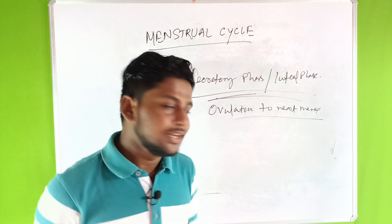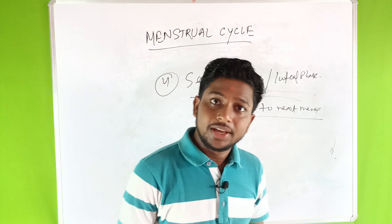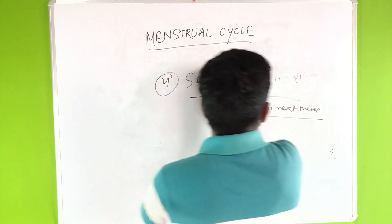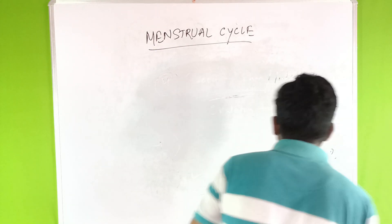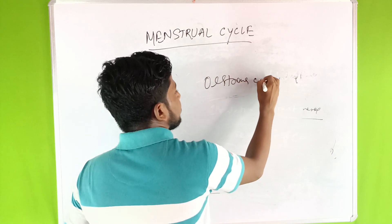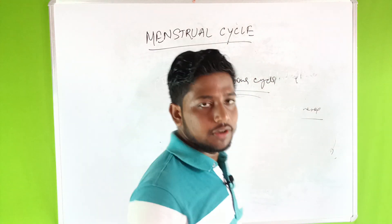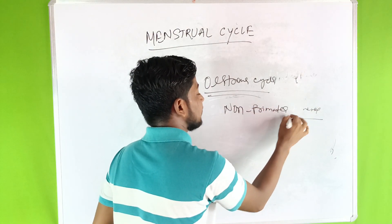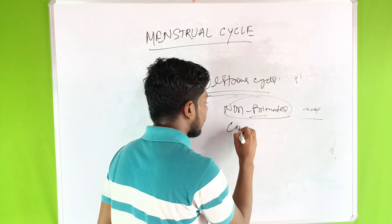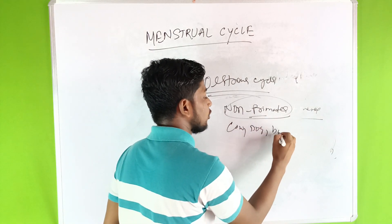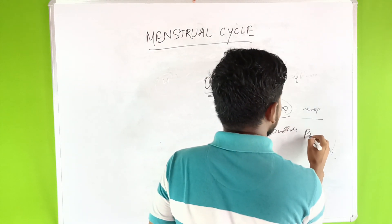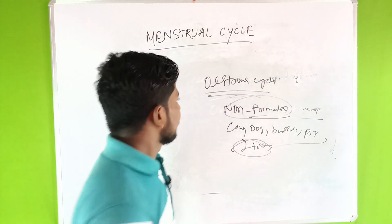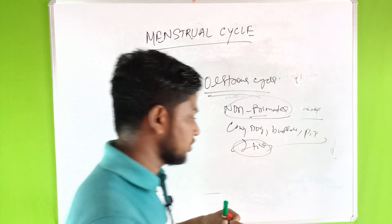The secretory phase lasts from ovulation to the next menses. The instructor also briefly discusses the estrous cycle, which is found in non-primates such as cows, dogs, buffaloes, and pigs. It is a seasonal cycle that occurs two times a year.